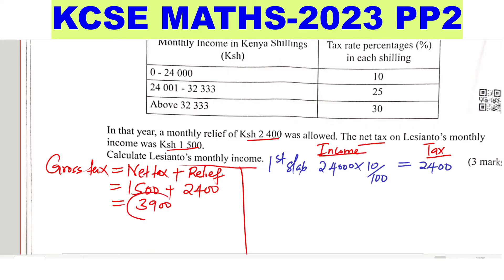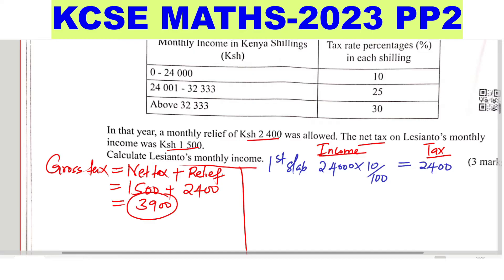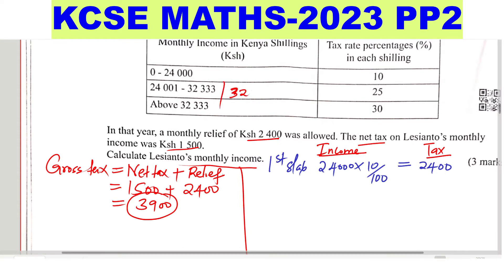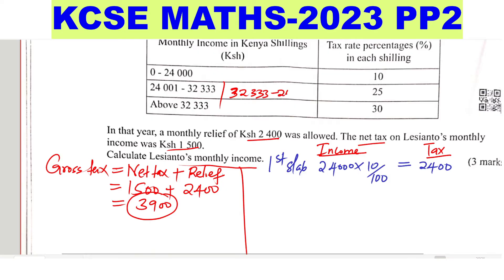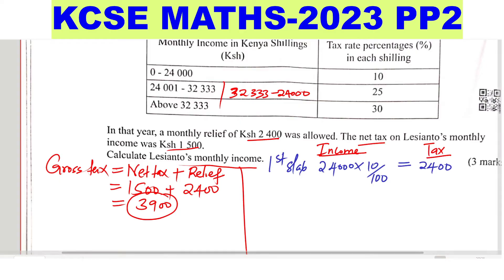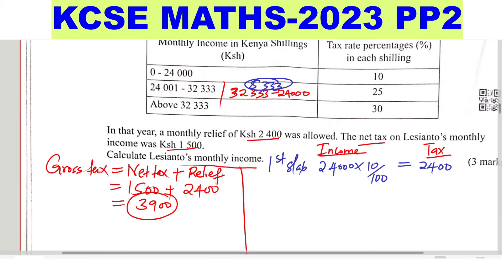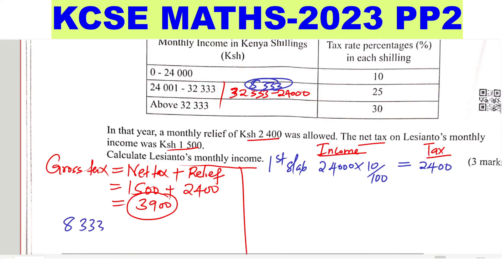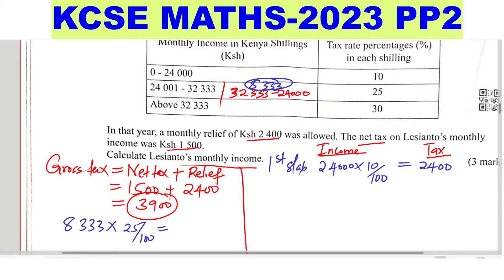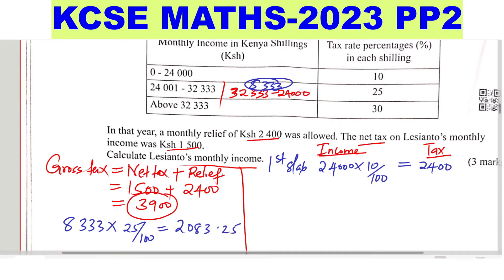We have a total target tax of 3,900 but only 2,400 from the first slab, so let's go to the second slab. The size of the second slab is 32,333 minus 24,000, which gives 8,333. If we tax that full amount — 8,333 times 25% — we get a tax of 2,083.25.